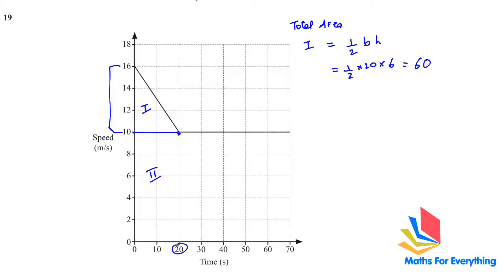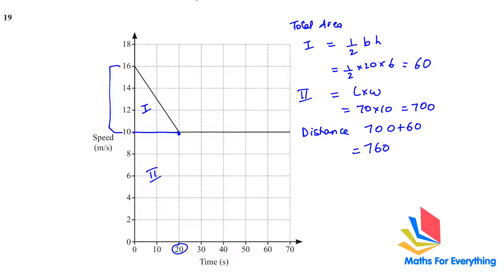That is 60. Next it's a rectangle, so length times width: 70 times 10 which is 700. So the distance is going to be 700 plus 60, which equals 760 meters.